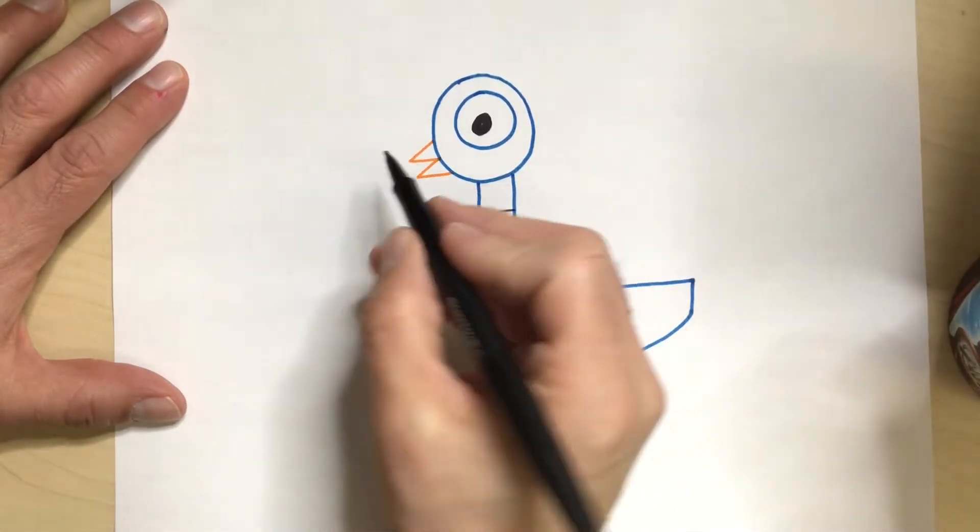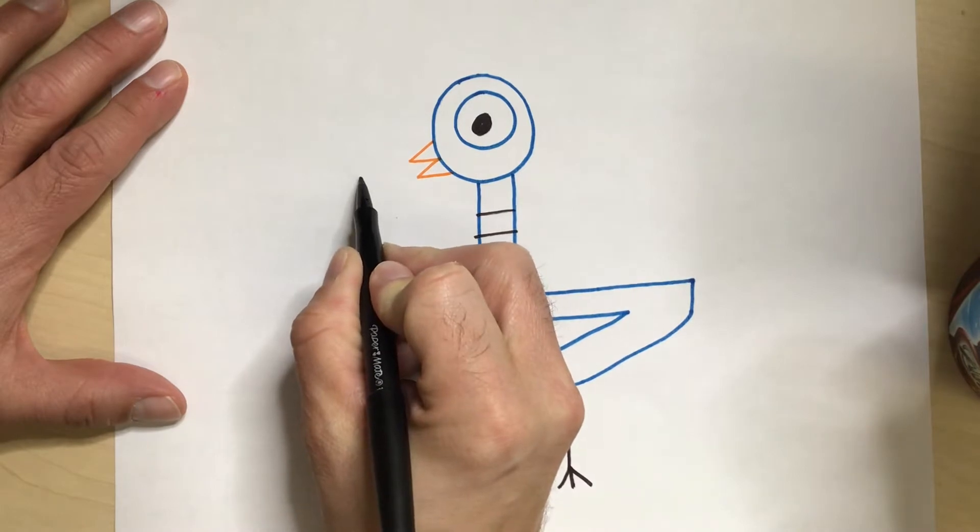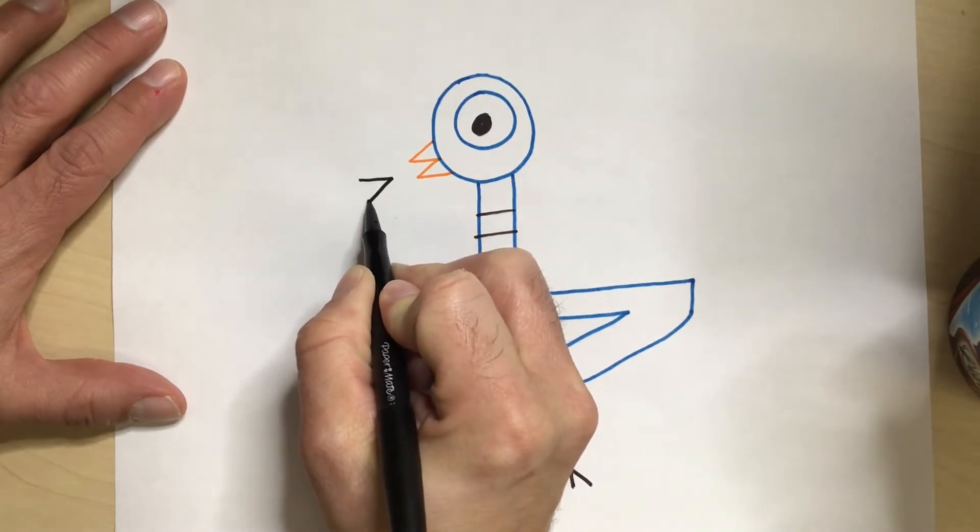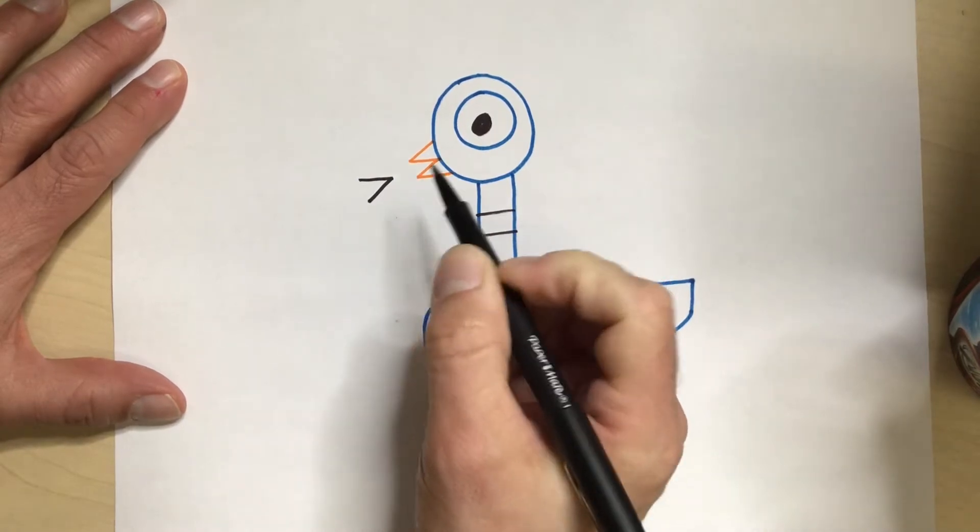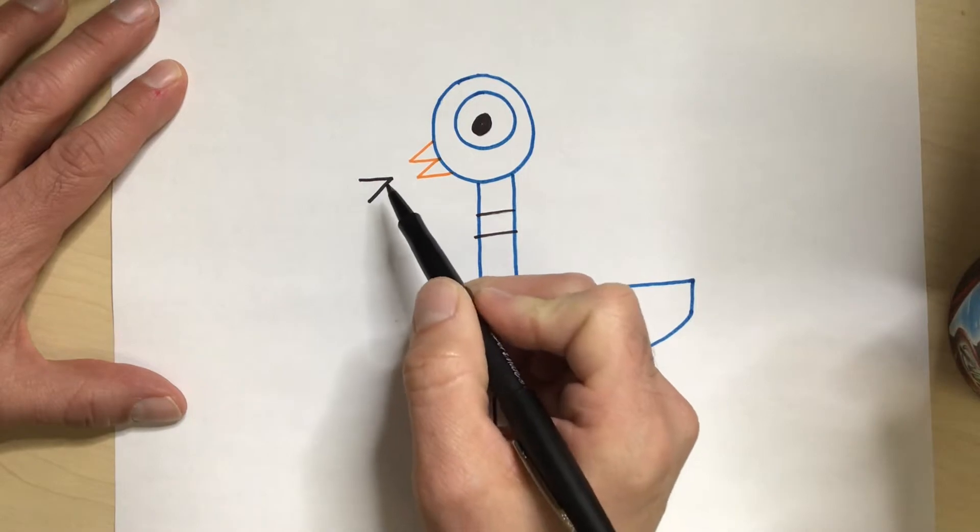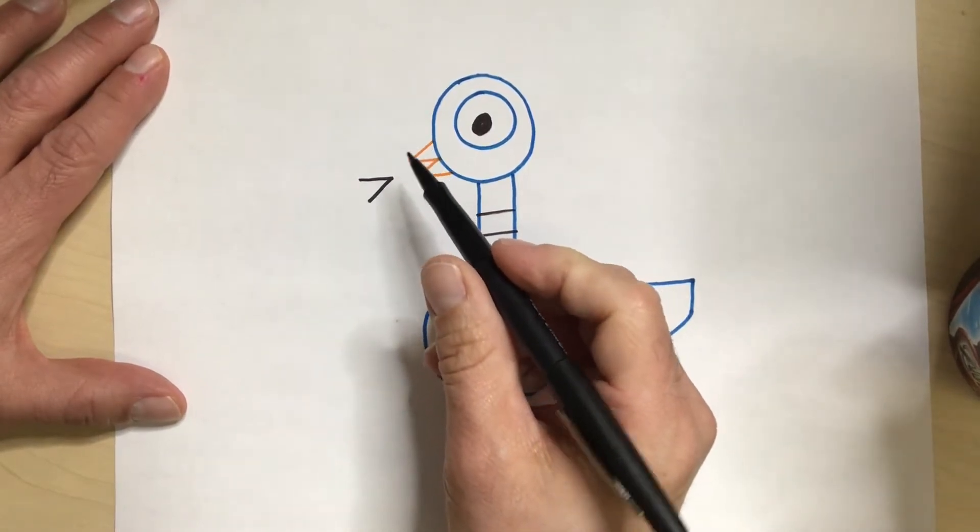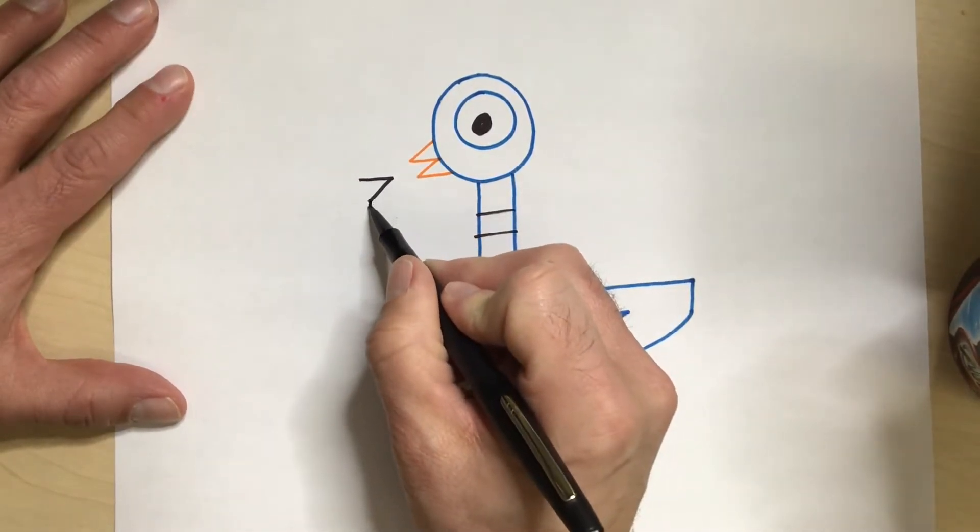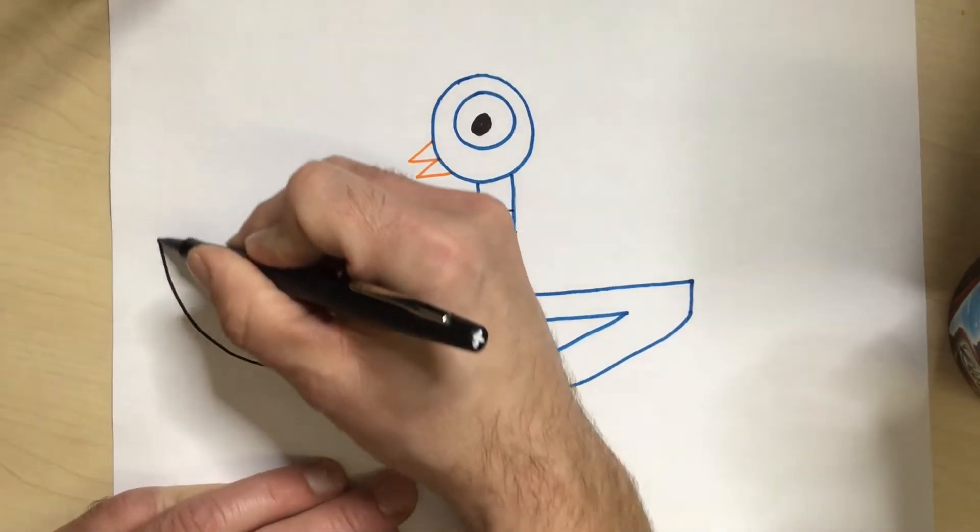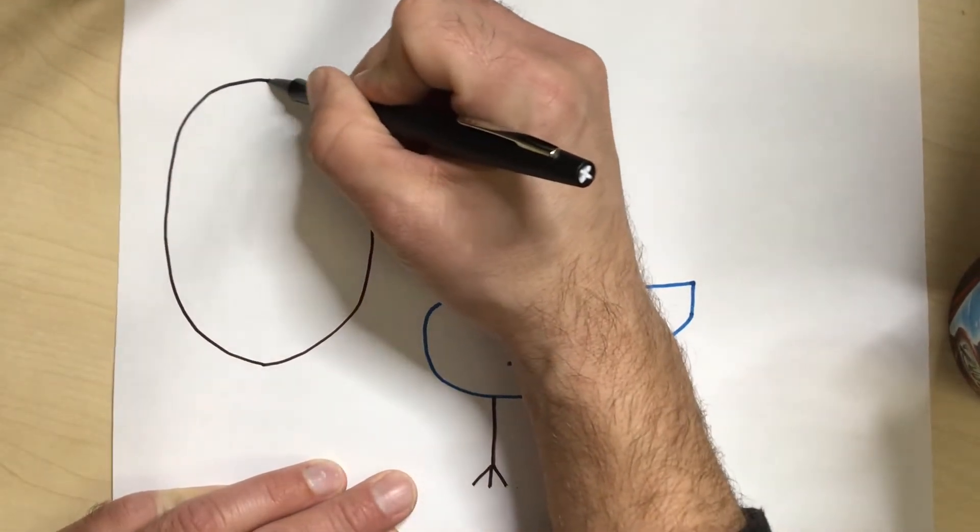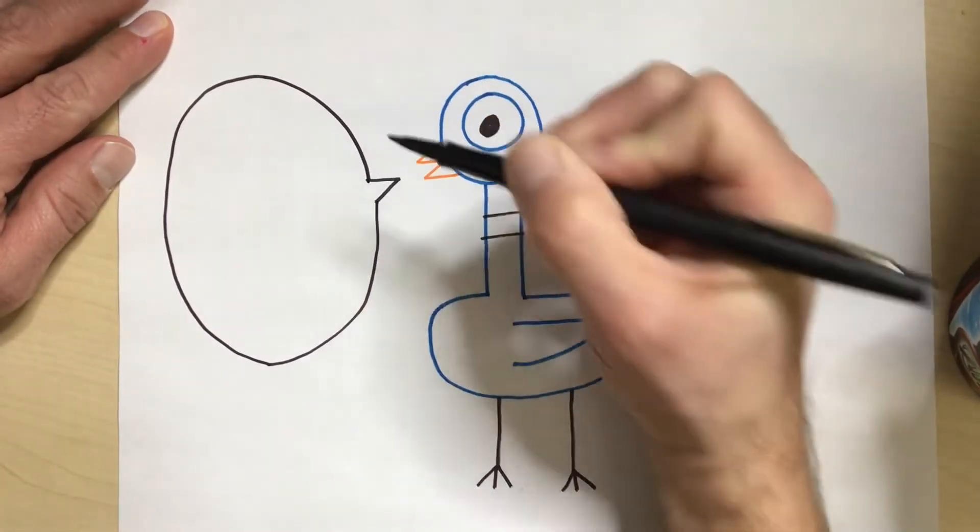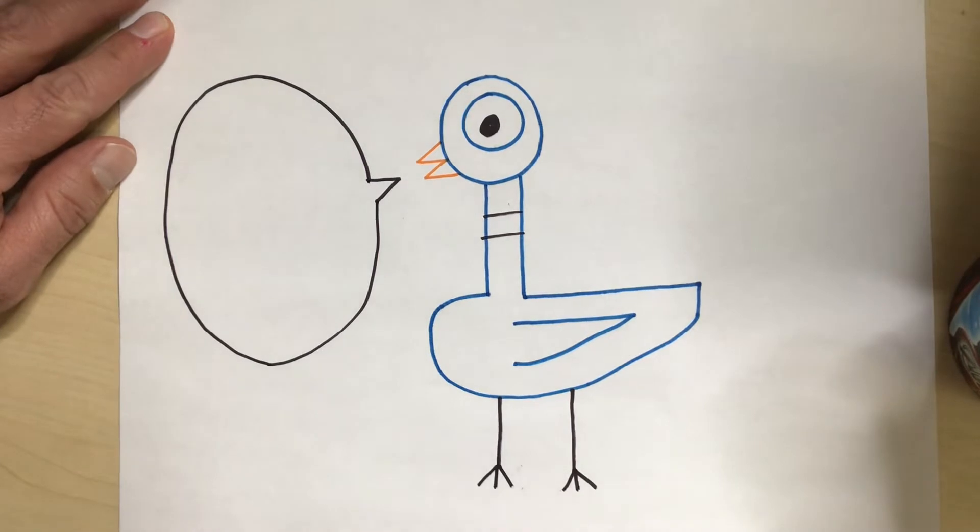Now, a speech bubble starts with kind of a triangle or part of an arrow pointing to the character's mouth. That's going to show us that it is this character saying the words we put inside the speech bubble. Then, we want to draw our speech bubble. I like to make speech bubbles a little bit bigger so that my words can fit inside the speech bubble.